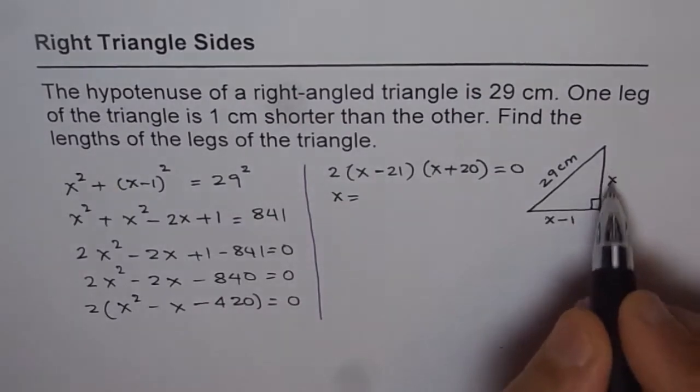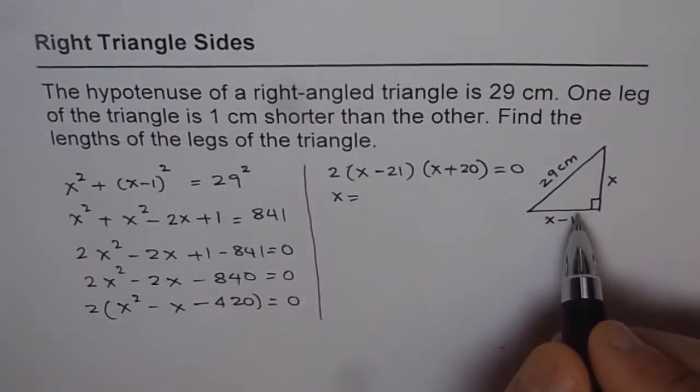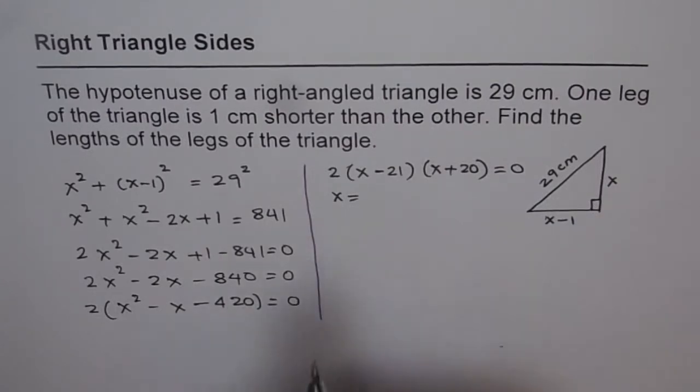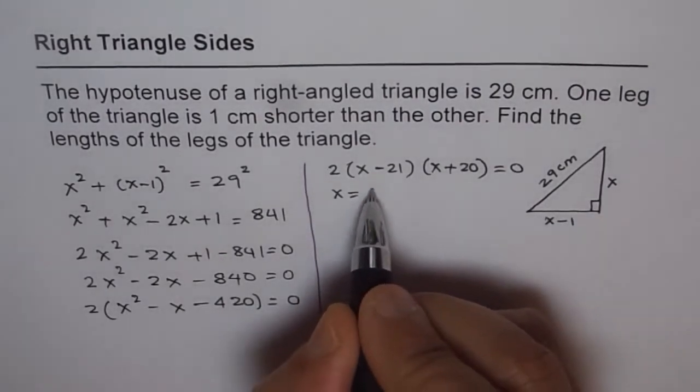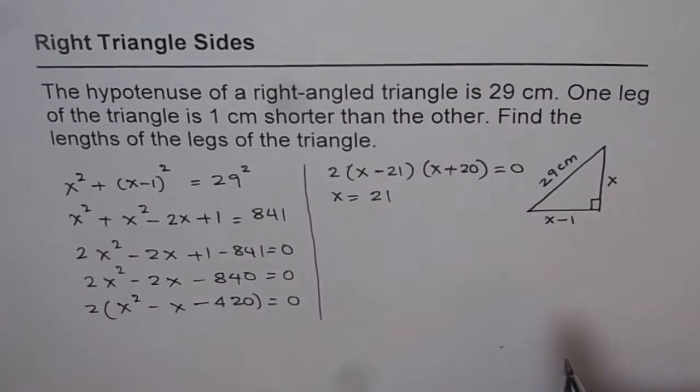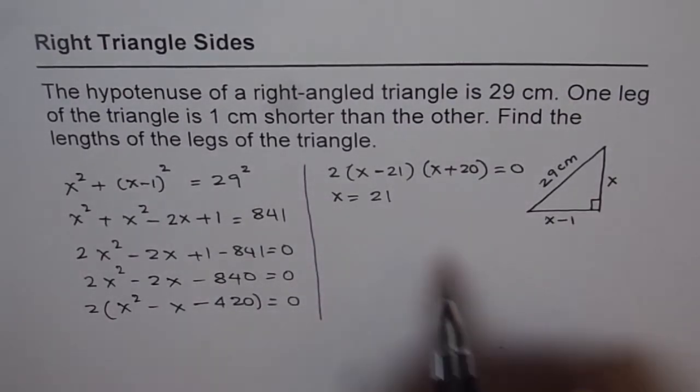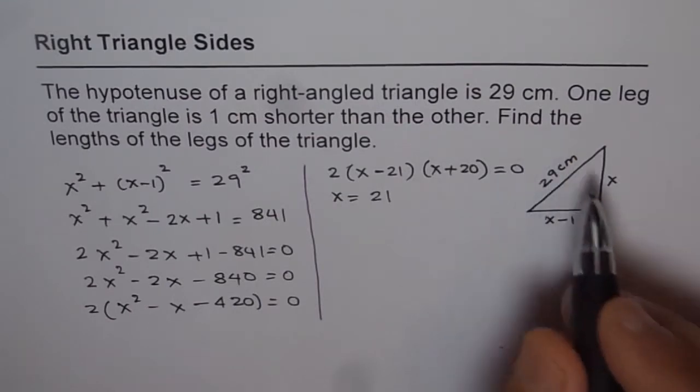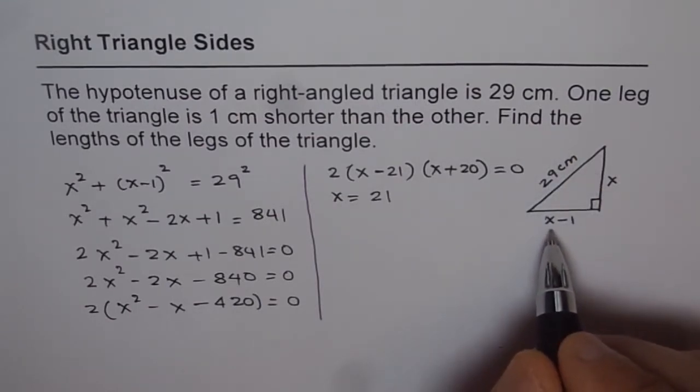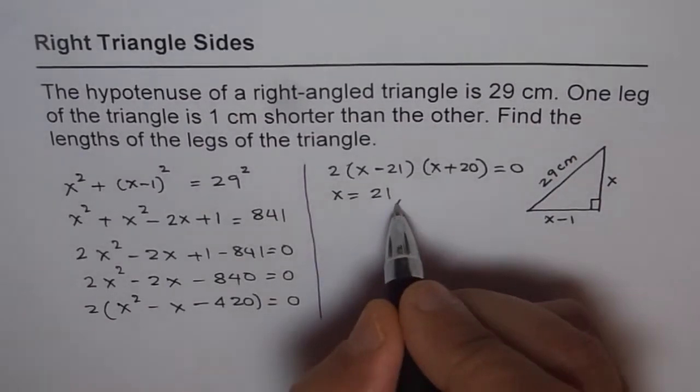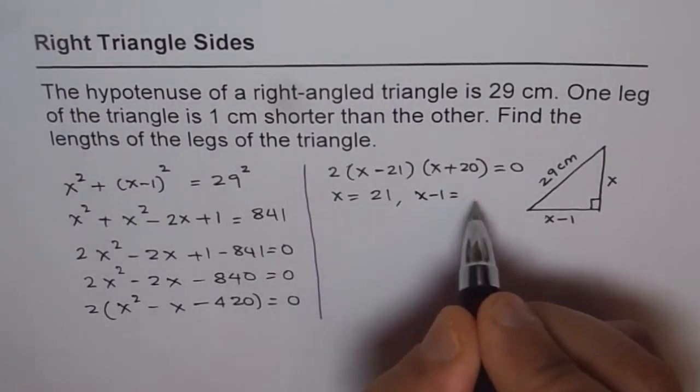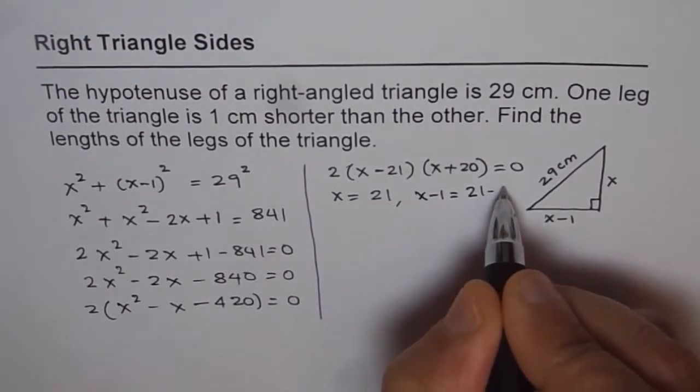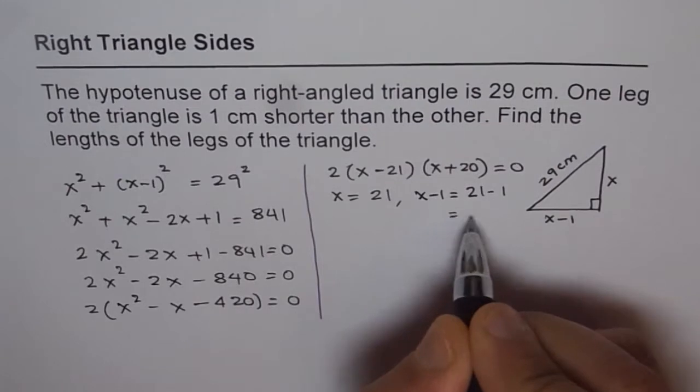Now since x is sides of your triangle, it has to be positive. And therefore the only permitted answer here is x equals to 21. So we will go with that. If x is 21, that is one leg is 21 centimeters, the other one will be 21 minus 1, which is 20.